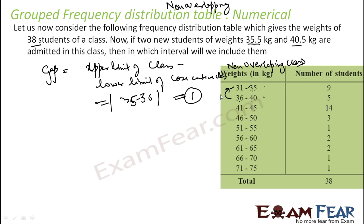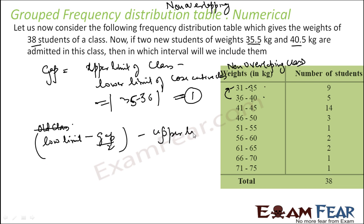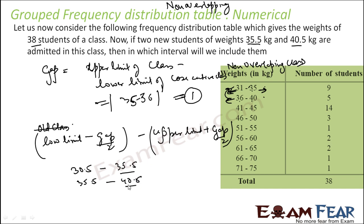The new class interval is calculated as: new lower limit = old lower limit minus gap/2, and new upper limit = old upper limit plus gap/2. So from both sides you are extending your class by gap/2. For example, 31 becomes 30.5 and 35 becomes 35.5 — expanding both sides by 0.5. Similarly, 36 becomes 35.5 and 40 becomes 40.5.